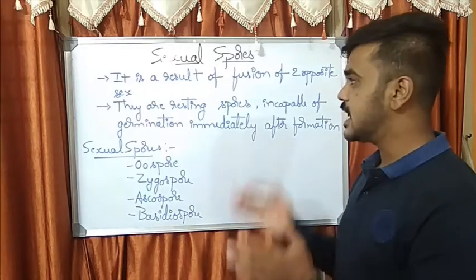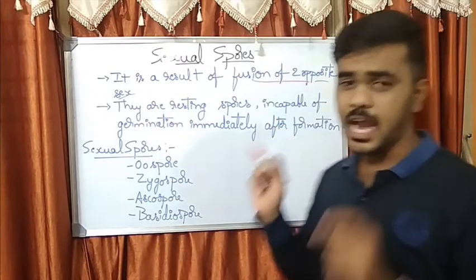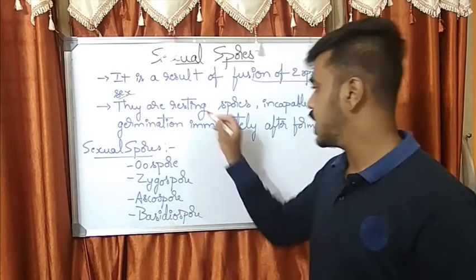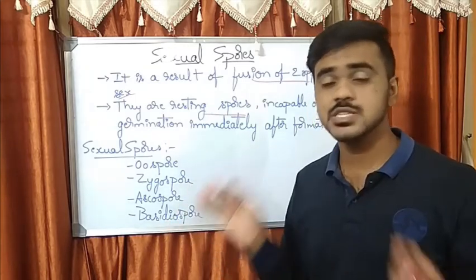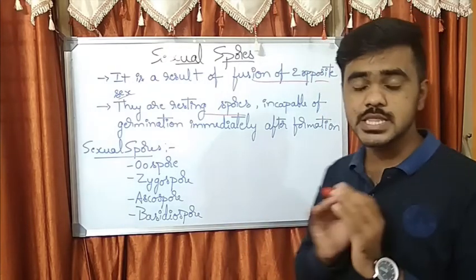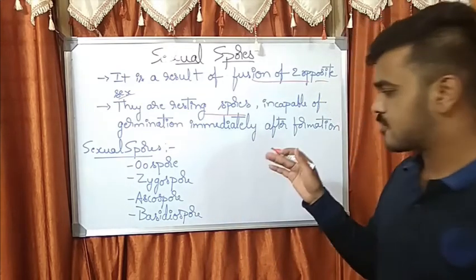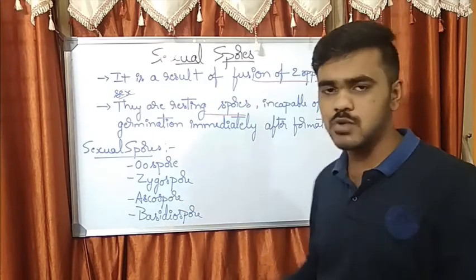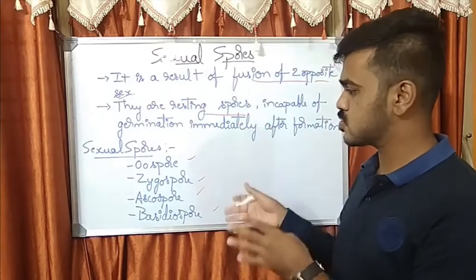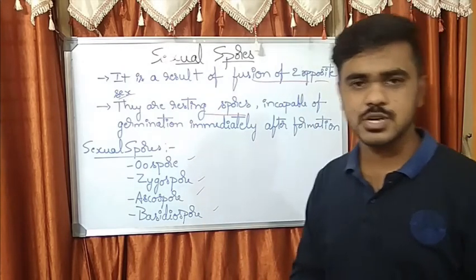Sexual spores are the result of fusion of two opposite sexes. It is a very common definition, and the important thing is these sexual spores are resting spores. They do not germinate as soon as they are formed. When sexual spores get formed, they won't germinate immediately. Among them, there are four different types of spores which we will be discussing now: oospore, zygospore, ascospore, and basidiospore. They usually represent their groups like Oomycota, Zygomycota, Ascomycota, and Basidiomycota. Now let's see oospore.